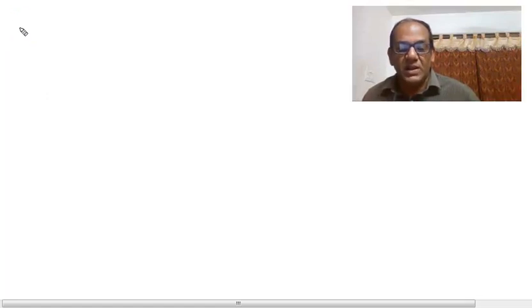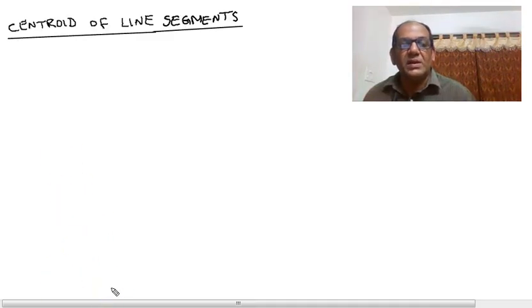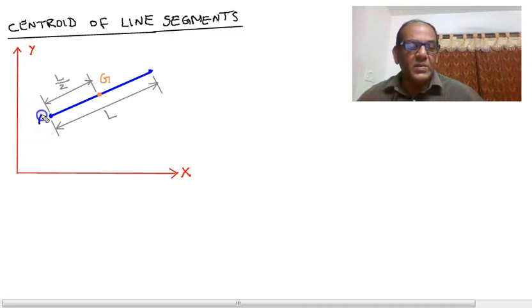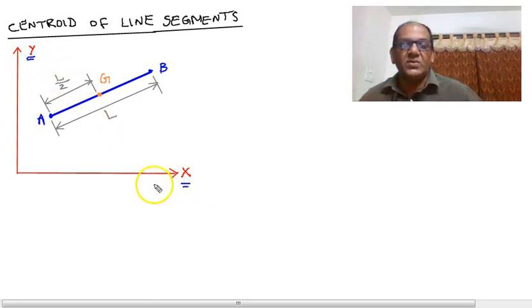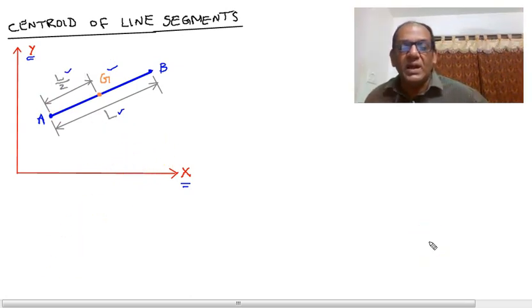Just as we have defined centroid for plane areas, we can define centroid for line segments also, and we see that topic briefly in this lesson. We begin by considering a straight line segment located centroid. Let us consider this straight line segment AB situated in coordinate system x, y. Its length being l. We say that centroid G lies at its midpoint, defined by the distance l by 2 from either end. This idea may be easily extended to several line segments existing in an x, y coordinate system.